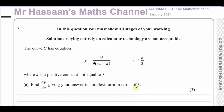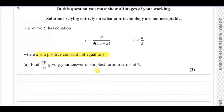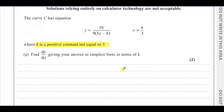We have a question about the curve C, which has equation y equals 16 over 9 times (3x minus k), where x cannot equal k over 3, and k is a positive constant not equal to 3. They ask us to find dy/dx, giving the answer in its simplest form in terms of k.